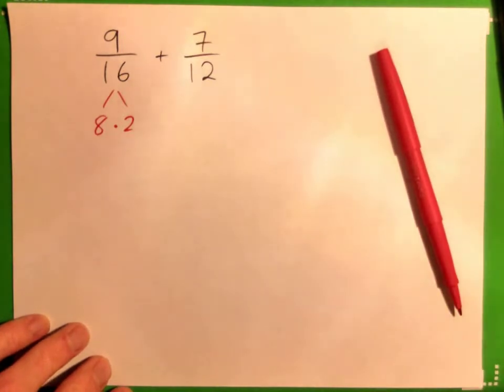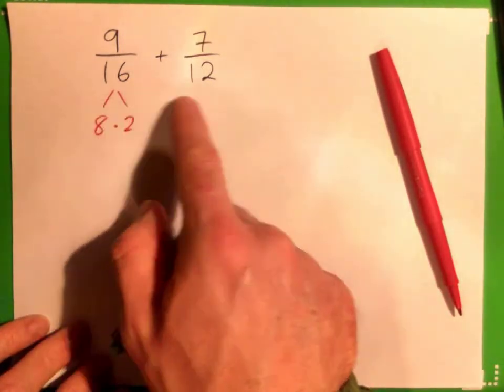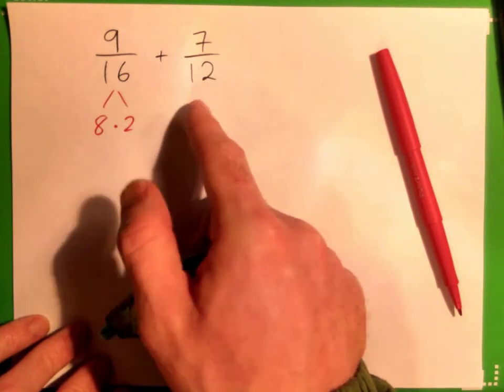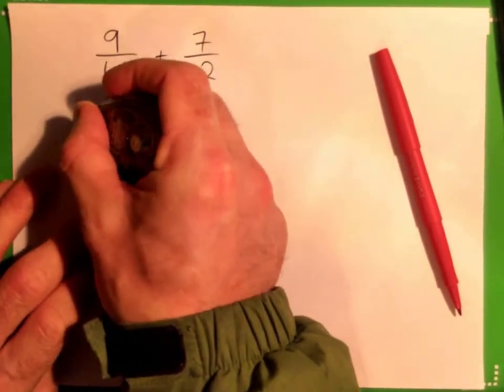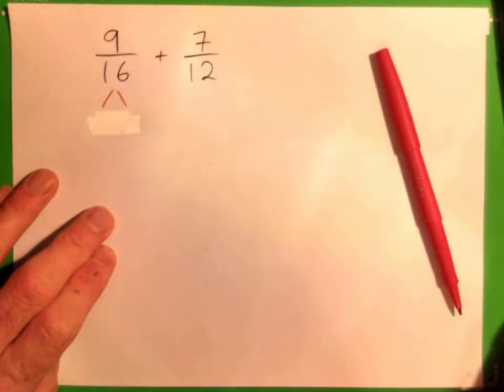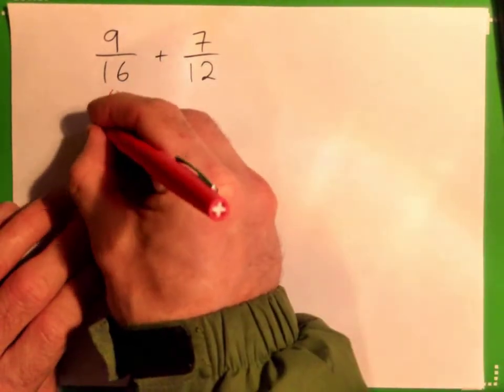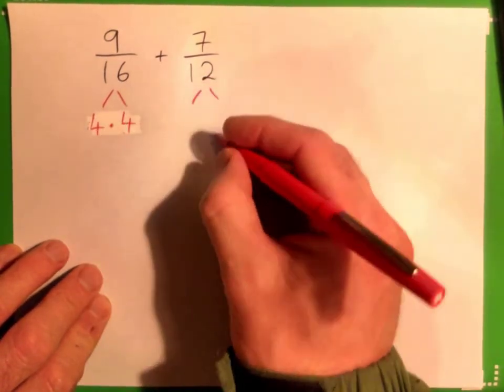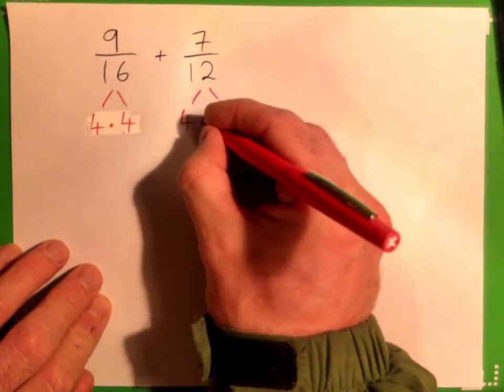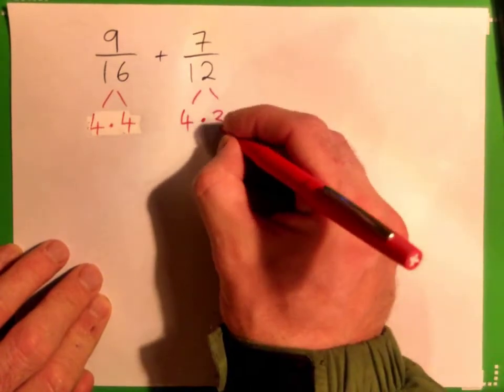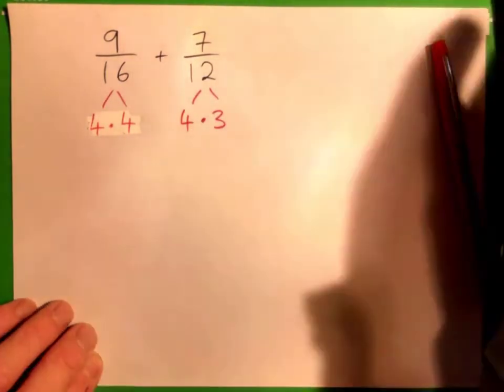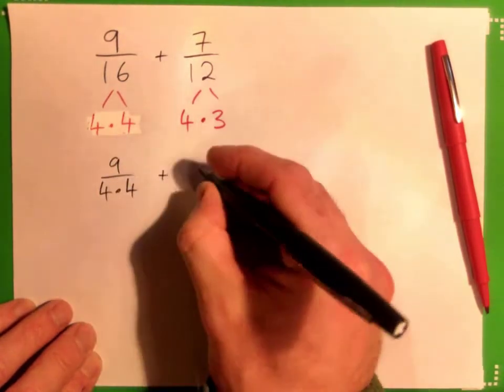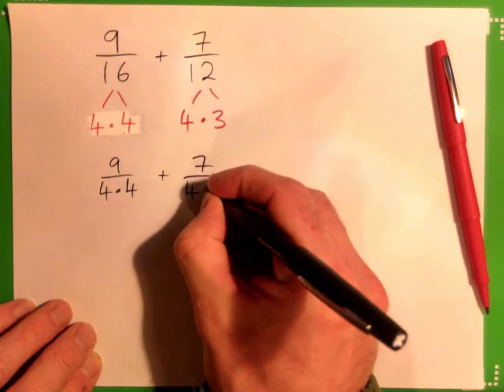And so, that's actually good. Is that the highest common factor of both bottoms? Yeah. So actually, just for fun, give me 4 times what gives 16? Beautiful. And break 12 up for me. 12 is 4 times what? Ah, that's nice. So what I want you to do is write this as 9 over 4 times 4, plus 7 over 4 times 3.